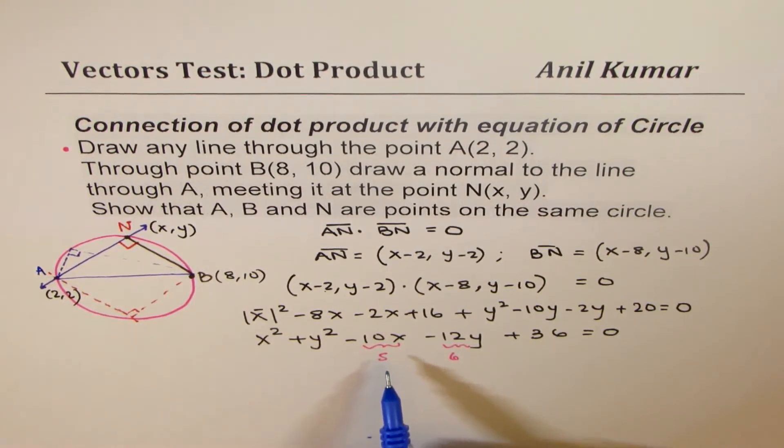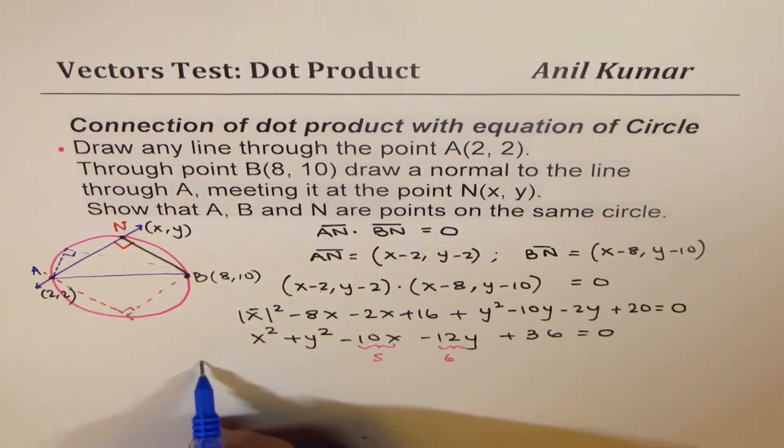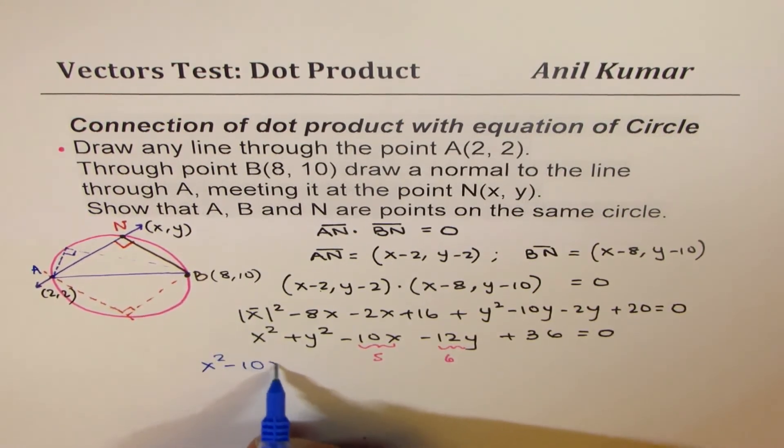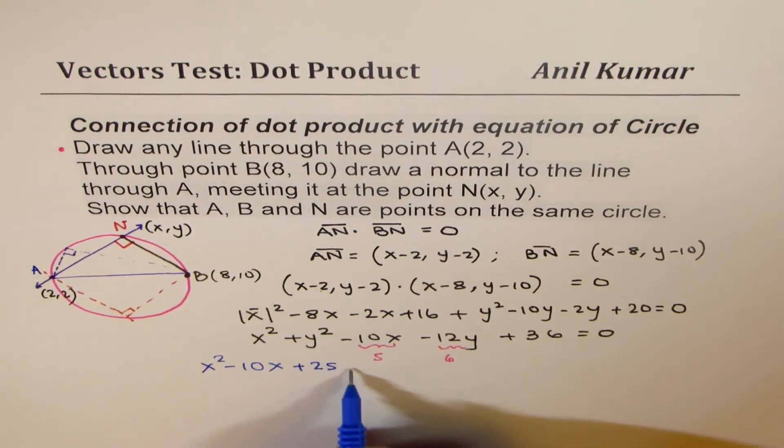So, X minus 5 whole square gives us 25. So to make it 25, what we can do here is add, because we have minus 10, so we can add plus and minus 25. Let me complete the squares. So we have X squared minus 10X. Now, the idea is to have a constant whose value is 25, because 2 times 5. So we'll add 25 and subtract 25. So we make this a perfect square.